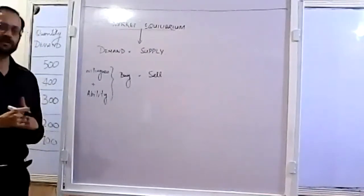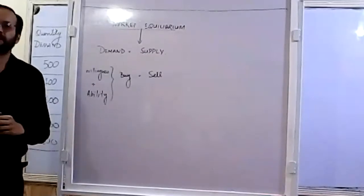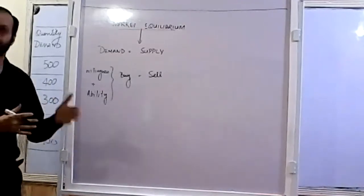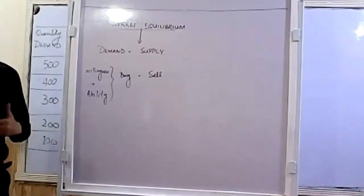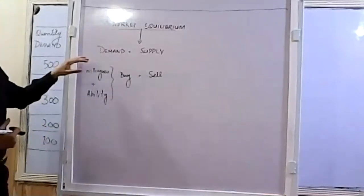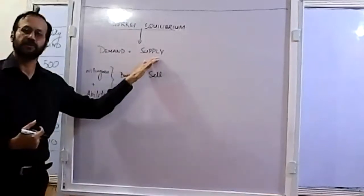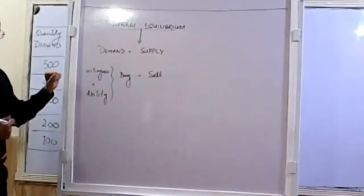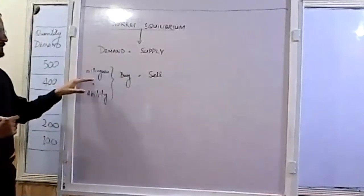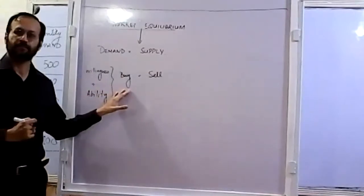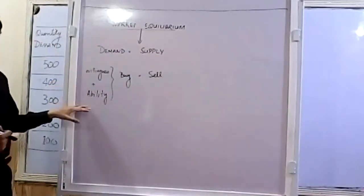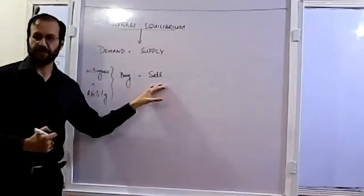We are going to start now with today's lesson. It was promised that today we are going to study about market equilibrium. We studied demand and supply last time, and today's topic is the way forward from that. As a quick review: demand is the willingness and ability to buy a product, and supply is the willingness and ability to sell something in the market.